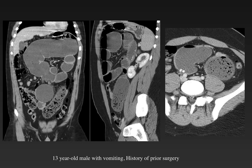Here we have a 13-year-old male with vomiting and a history of prior surgery, and we see the small bowel fecalization sign. This refers to dilated distal bowel appearing to contain fecal material, and is often seen at the most distal point of obstructed bowel, just proximal to the site of obstruction. Here we can see a sharp transition zone right distal to the fecalized bowel as a result of adhesions in this postoperative child.